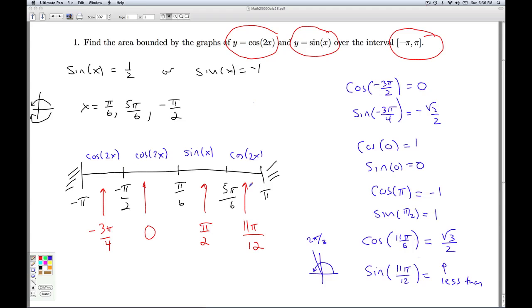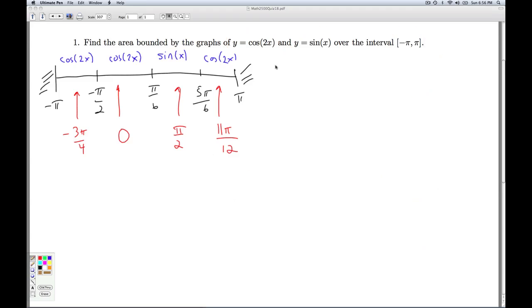We can sketch the problem situation, and then we'll have a pretty good idea as to what's going on. With this data, we can actually go ahead and find the area by subtracting top minus bottom. But I still want to help visualize what's going on. So we'll say this is minus pi, this is pi. We'll graph the sine of x here in blue.